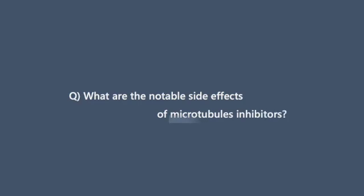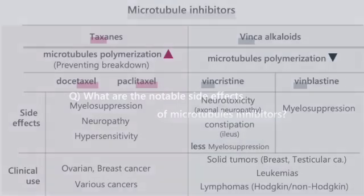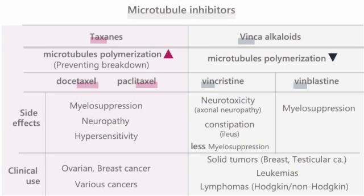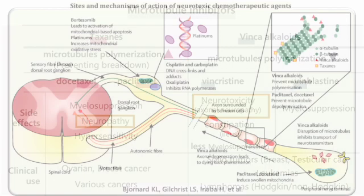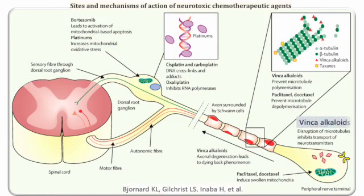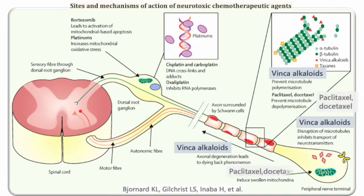Question 2: What are the notable side effects of microtubule inhibitors? Notable side effects include neurotoxicity. Vinca alkaloids disrupt microtubules, which inhibits the transport of neurotransmitters. Paclitaxel and docetaxel cause mitochondria to swell.